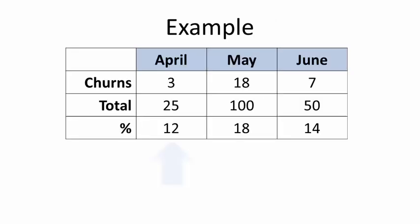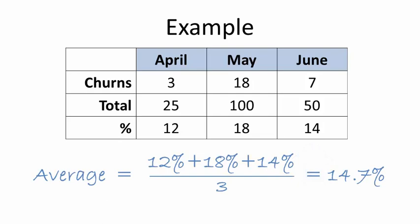25 customers come up for annual renewal in April, and 3 cancel, giving a churn rate of 12%. In May, 18 out of 100 renewing customers cancel for a rate of 18%, and in June, 7 out of 50 cancel, or 14%. The manager then calculates an average for the quarter by adding up and dividing the percentages by 3, giving an annual churn rate of 14.7%.